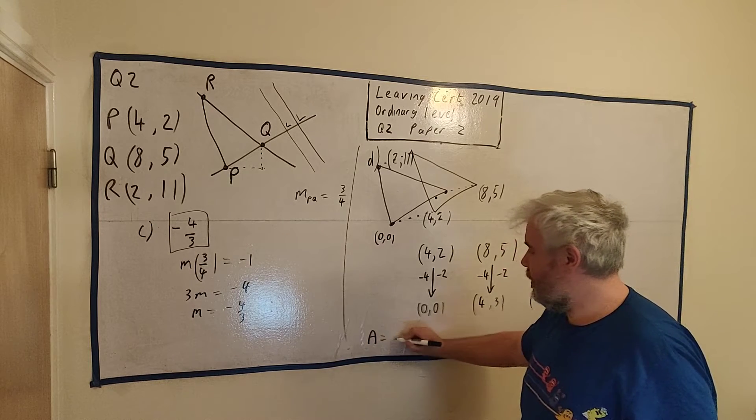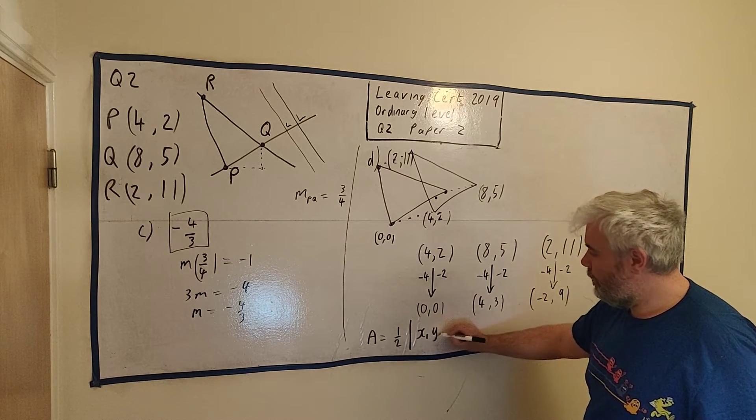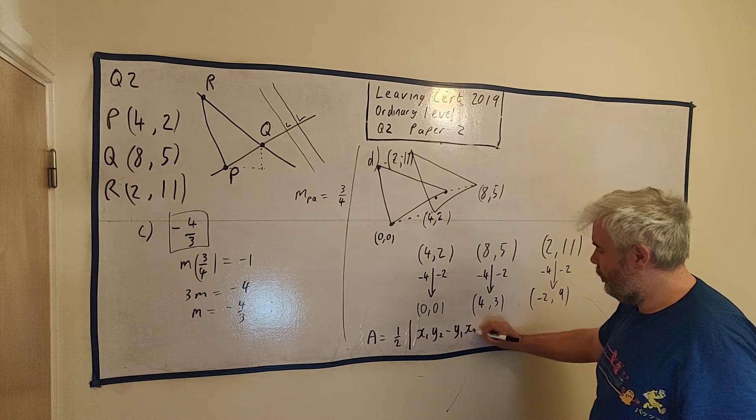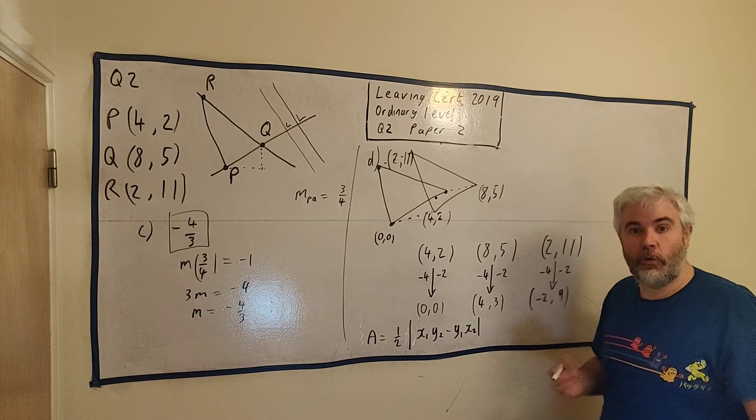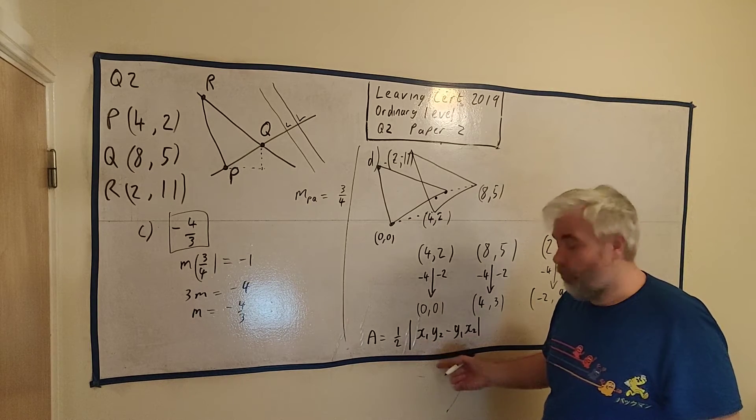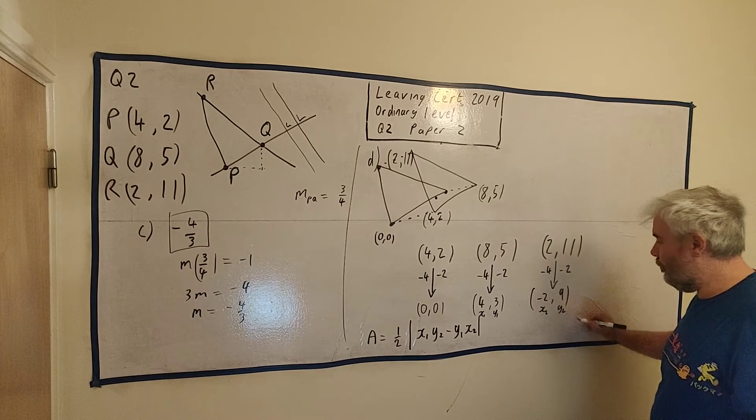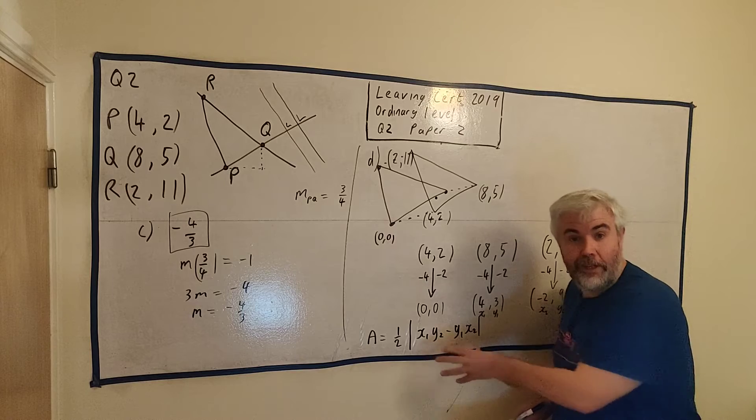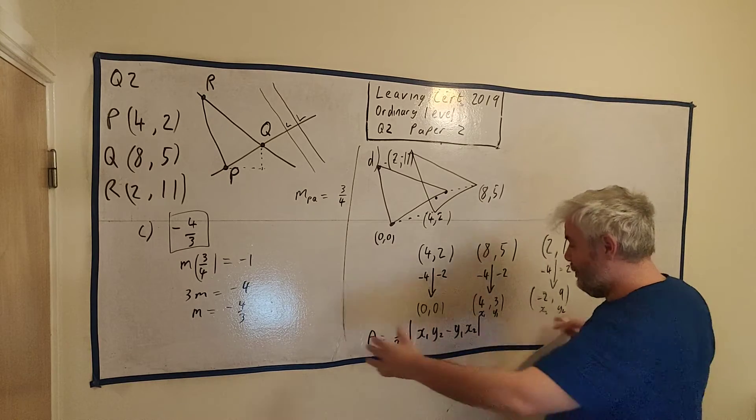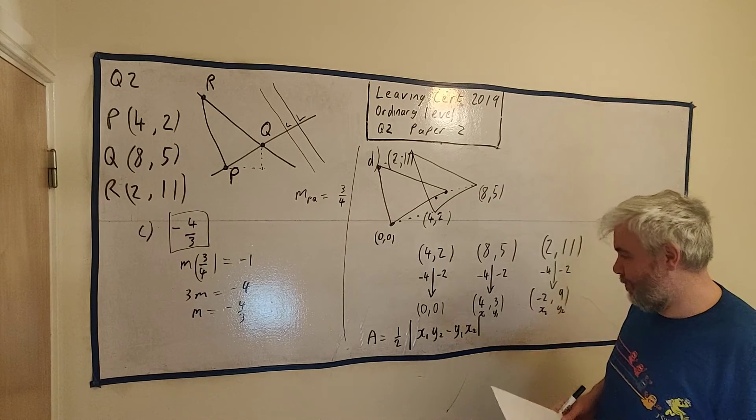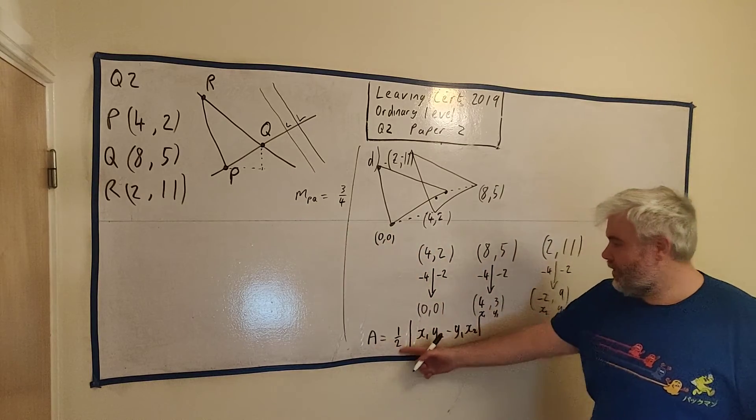The formula is A equals a half times the absolute value of X1 Y2 minus Y1 X2. This is in your formula book in the coordinate geometry section. Where X1 Y1 is one point, X2 Y2 is the second point, and the third point is just zero. That's why this formula looks so neat.